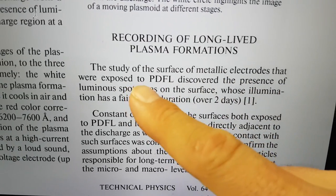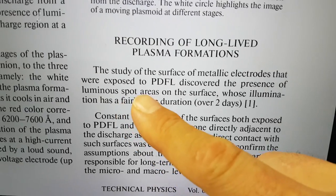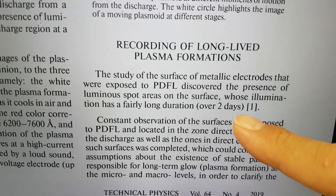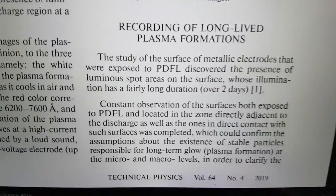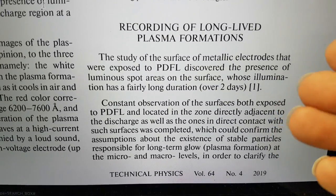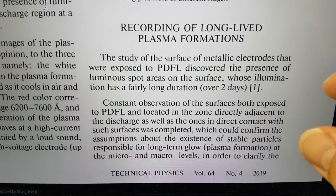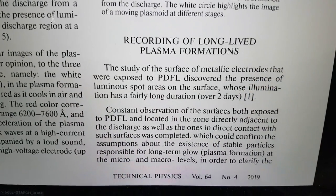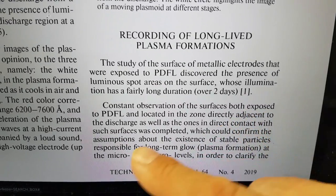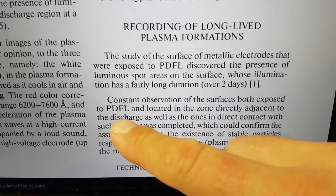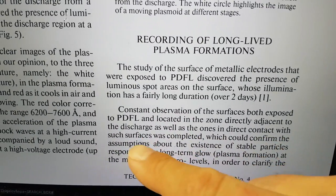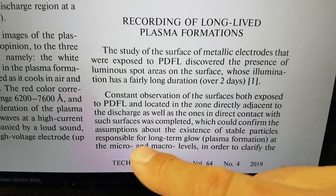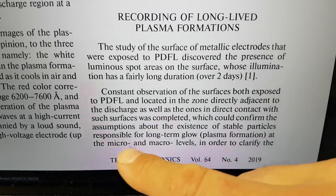There's a lot of really interesting things to talk about in this. But this is really, for me, the big win. Recording of long-lived plasma formations. The study of the surface of metallic electrodes that were exposed to this process discovered the presence of luminous spot areas on the surface whose illumination has a fairly long duration. Over two days! Ed Lewis talking about when you get what he called condensed plasmoids or so forth in this state, it actually persists after the processing. This kind of supports that.